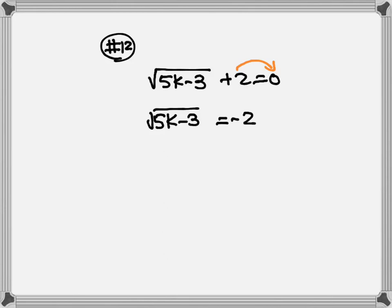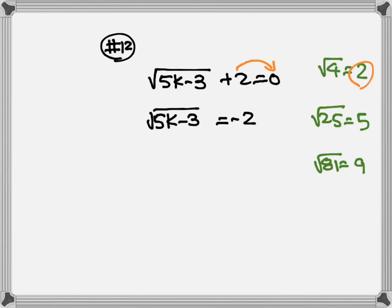Before we do anything, let's check this out. Square root of 4 is positive 2, square root of 25 is positive 5, square root of 81 is positive 9. You can see all square roots equal a positive number. Here, the square root equals negative 2. Square root cannot equal negative 2. So, this will be no solution.